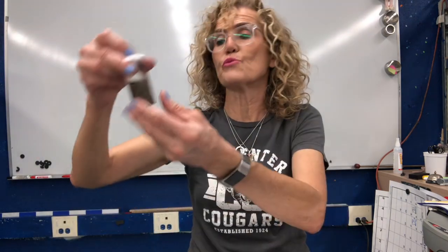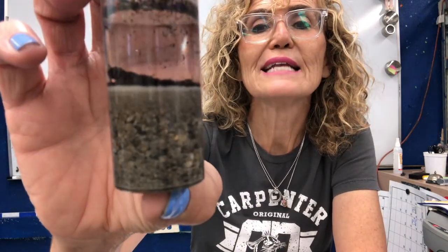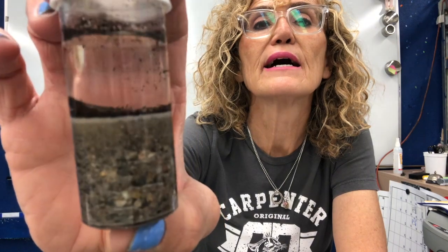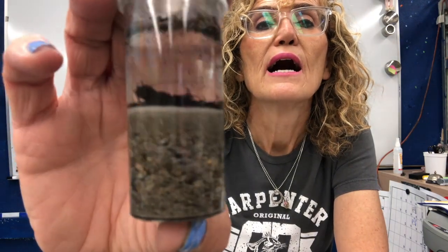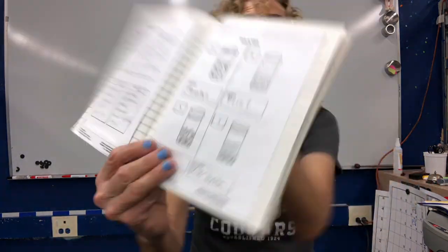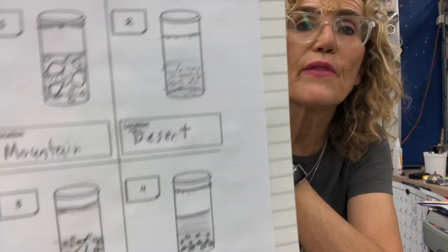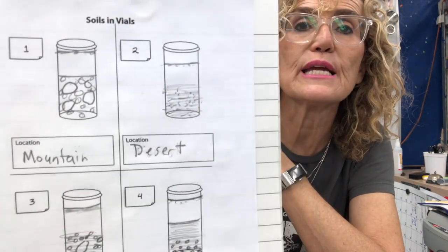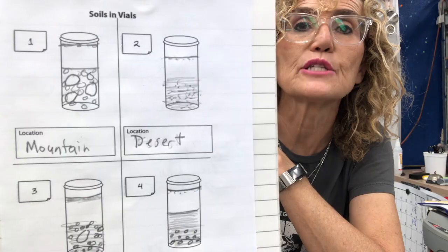And the final one is the river delta — sand and clay and some organic matter. Make sure that you have drawn those pictures in your science notebook.